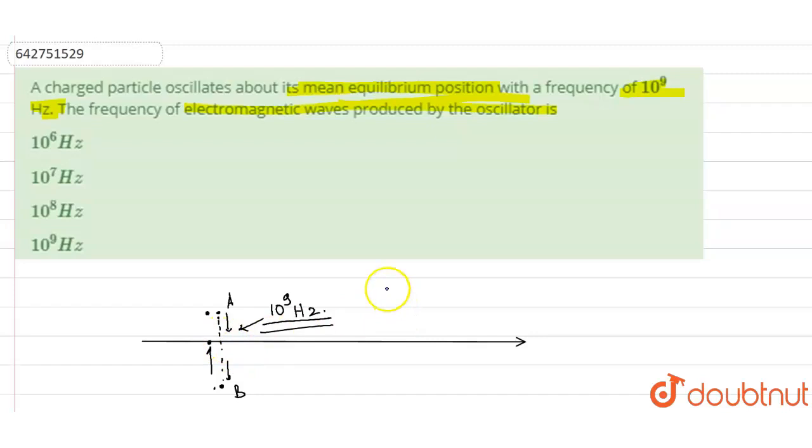So when a charged particle oscillates, it produces electromagnetic wave around.